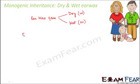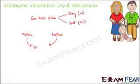Let us say this is the father and this is the mother. Both of them will contribute one allele of this gene. For every gene, one allele comes from the father and one allele comes from the mother. Let us say the father contributed capital W — the wet earwax allele — and the mother contributed small w — the dry earwax allele.